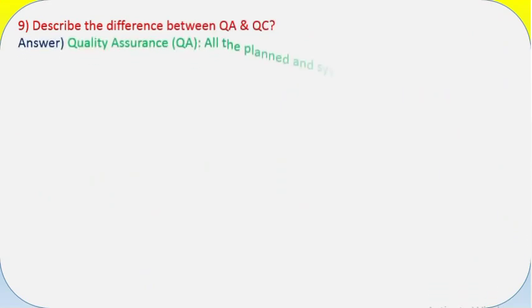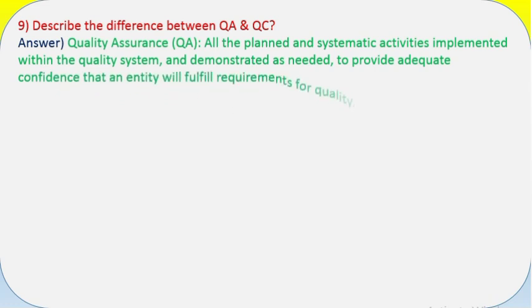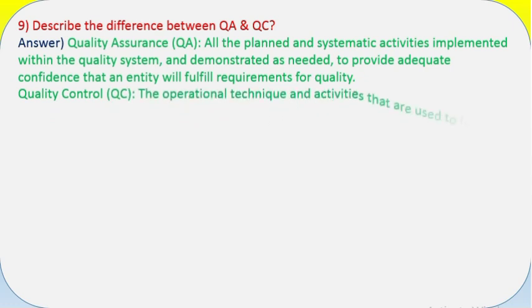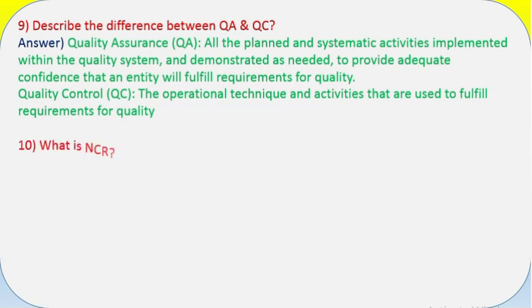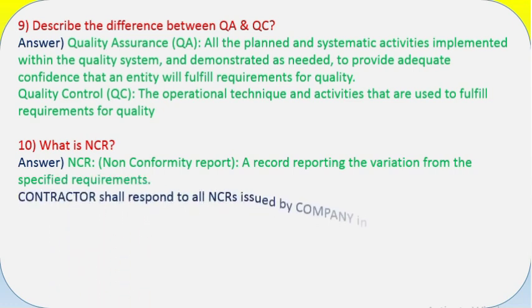Answer: Procedure Qualification Record certifies that test welds performed in accordance with the WPS meet code requirements and summarizes the specific test results. Question 9: Describe the difference between QA and QC. Answer: Quality Assurance (QA) - all the planned and systematic activities implemented within the quality system.